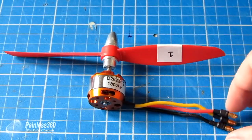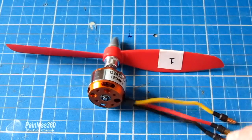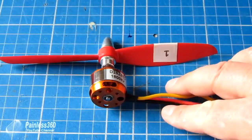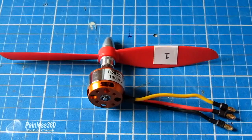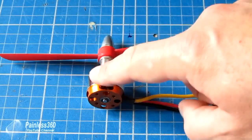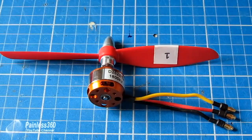Before we get into that detail, this is essentially like a three-phase AC motor, so there aren't any brushes in here, which makes them very long lasting motors. The things that wear out on these will be the bearings before anything else.